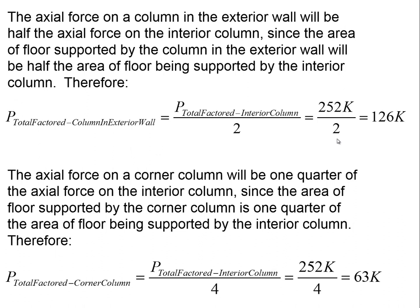For columns other than the interior one: the interior column supports twice the floor area of an edge column, so the total factored axial force in an edge column is 252 kips divided by 2, which equals 126 kips. A corner column supports one quarter the area of an interior column, so its factored force is 252 kips divided by 4, which equals 63 kips.